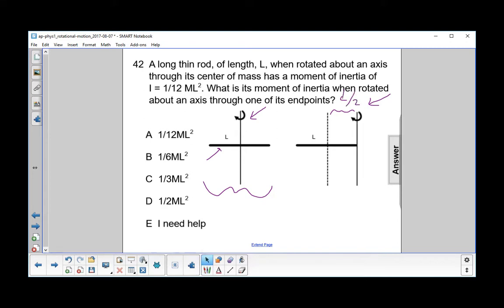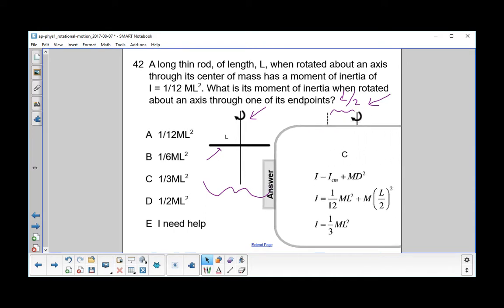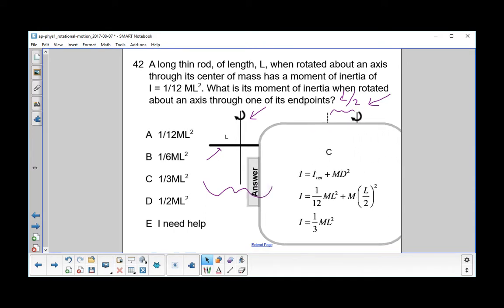Now we're going to use the parallel axis theorem, and the parallel axis theorem states that the moment of inertia about any other axis is equal to the moment of inertia about the center of mass, plus the mass times the distance away, the distance between the new rotational axis and the one through the center of mass.